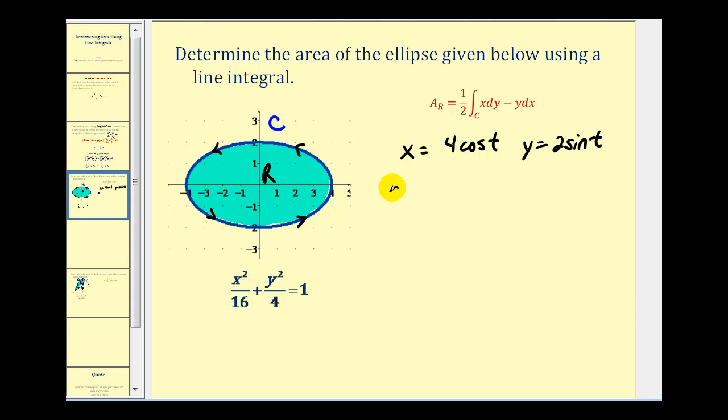So this also tells us that dx would be equal to negative four sine t dt and then dy would be equal to two cosine t dt.